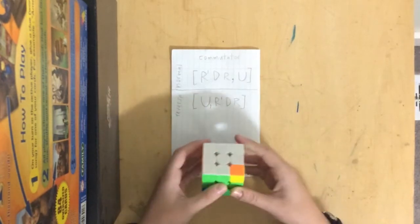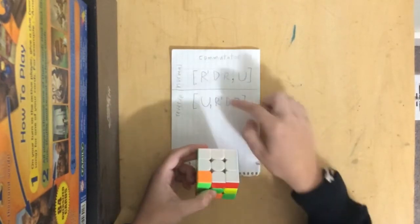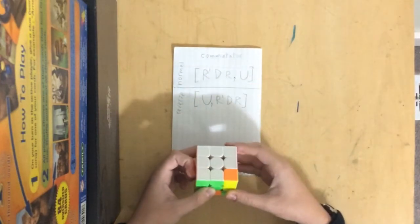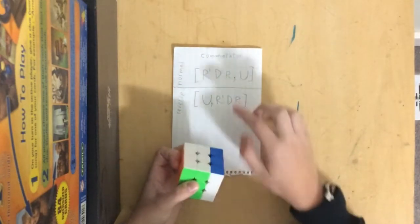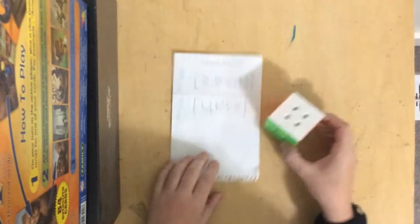So you do U, R' D' R, then go back to here, U' R' D' R, and that reverses.